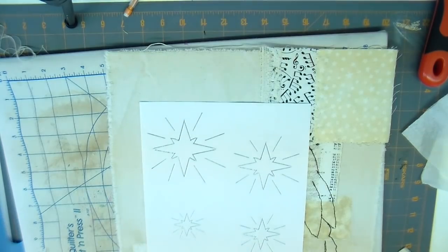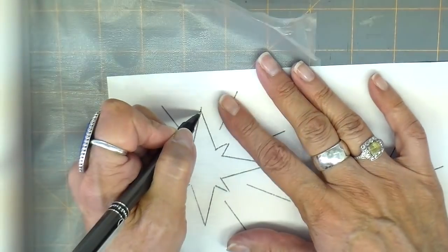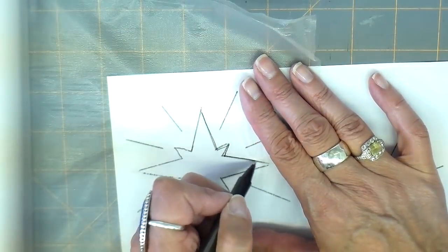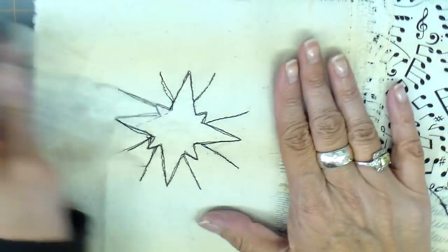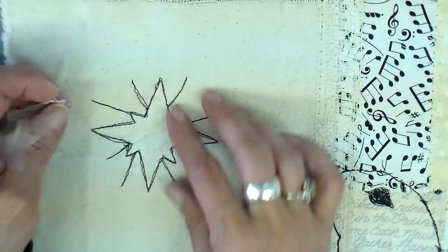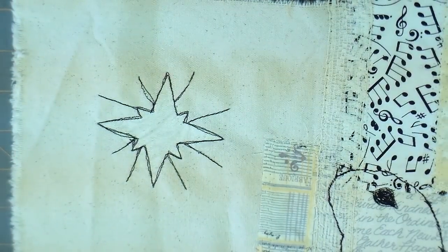And I'm going to do the same with my star. I'm going to add that using my Sulky and just going to be tracing that and then pinning it into place and then taking it to my sewing machine. And then I'm going to remove that Sulky in the same way, just carefully removing it.